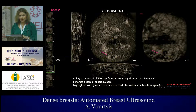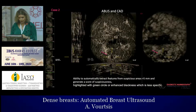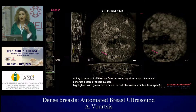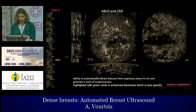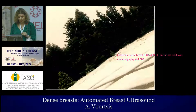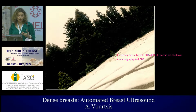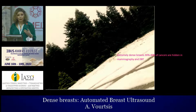We now use AI for ABUS. It is commercially available — it's called CubeUCAT, a company located in the United States. It provides the ability to automatically extract features from suspicious lesions, which are highlighted as dark areas or circled with green ink. When we talk about dense breasts, it's like trying to recognize a snowball thrown into an area full of snow — it's not possible without assistance.